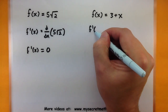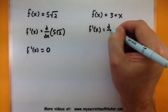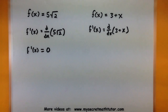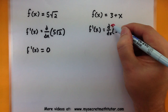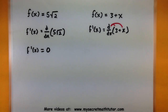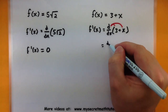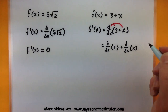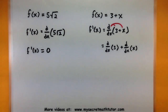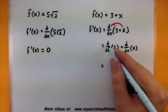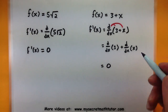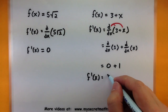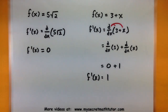In this next one we want to take the derivative of 3 plus x. Notice how this one has two different pieces, so we want to take the derivative of each of them — we can do this because they're connected using addition. We need the derivative of 3 and the derivative of x. The derivative of a constant is 0, and the derivative of a single x is 1. So the derivative of f is simply 1.